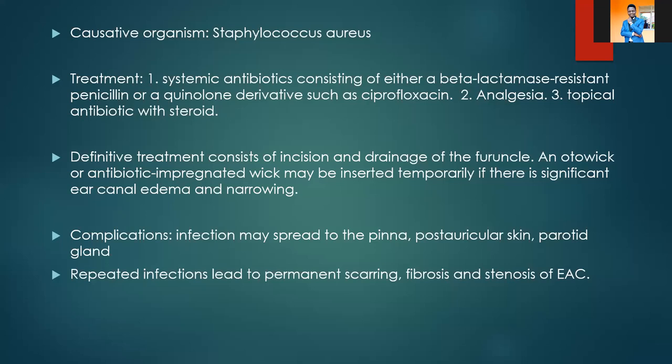Complications of a furuncle in the ear include spread of infection to the pinna, so the patient may get perichondritis. Spread to post-auricular skin causes post-auricular skin edema. Spread to the parotid gland or lymph nodes causes adenitis. Repeated infections can lead to permanent scarring of the external auditory canal with fibrosis and stenosis — that is narrowing of the external auditory canal.